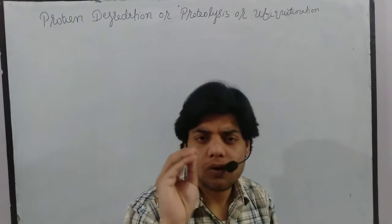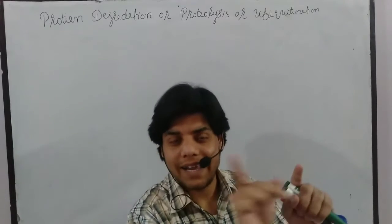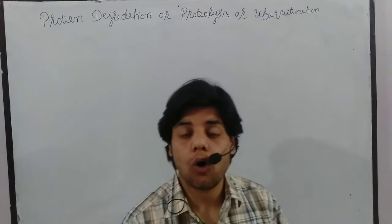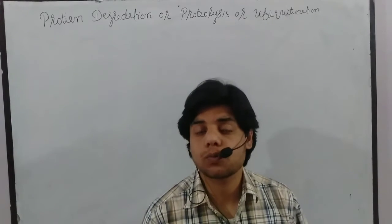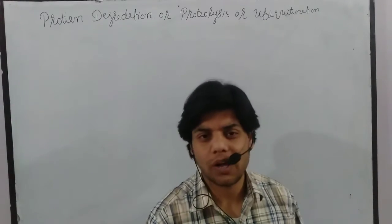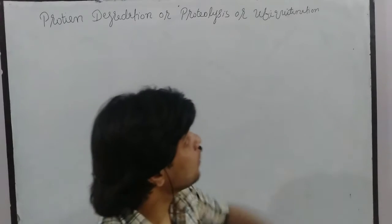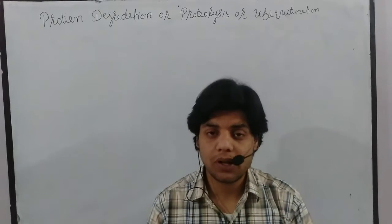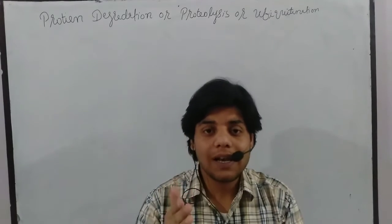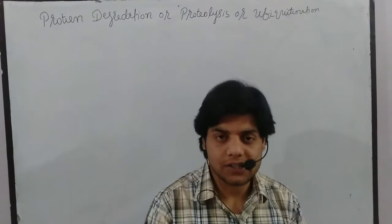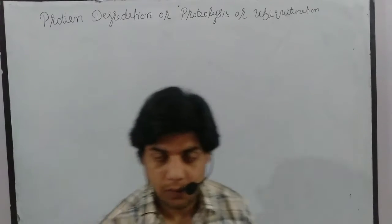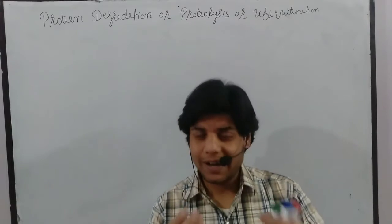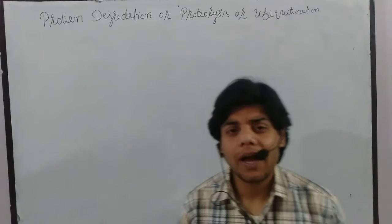Ubiquitination is a process where a ubiquitin protein attaches to unfolded, incorrectly folded, misfolded, or non-functional proteins — those which are workless and don't have a function in the cell. Ubiquitin attaches to such protein and tags it for degradation. This phenomenon is called ubiquitination.